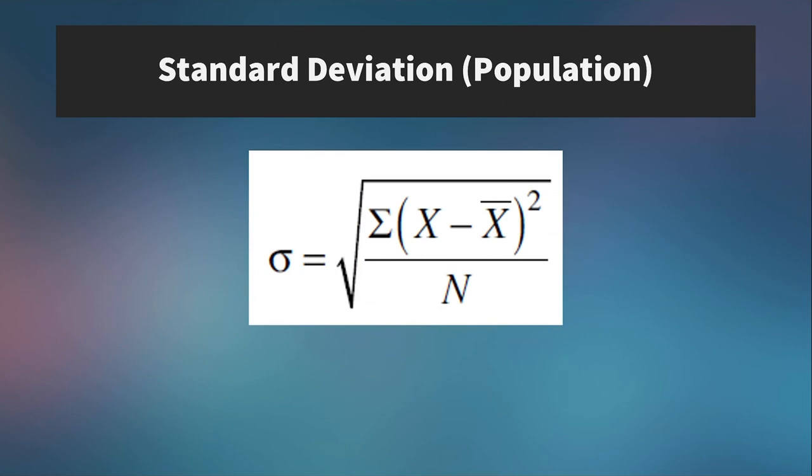Now, if we wanted to calculate the standard deviation, which, when we're talking about the population, that's denoted by this Greek character sigma, we would simply take the square root of that. The square root of the sum of all scores minus the mean squared over the total number of scores.